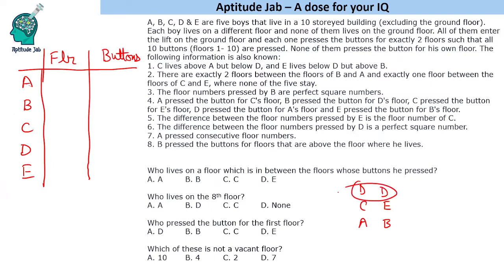Since C and E are both below D, and A and B are also below D, this means D is at the top. But D is not necessarily on floor number 10, since only five floors are occupied. There are exactly two floors between the floors of B and A.